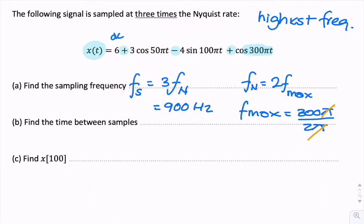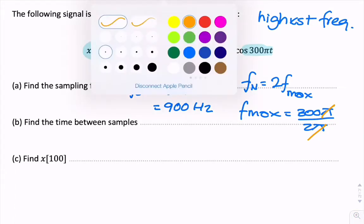So, the pi goes with the pi, 2 with the 2, 3 times 3. So, that's 900 hertz. So, that's for part A.